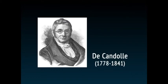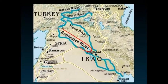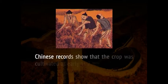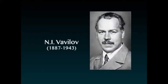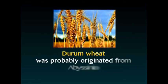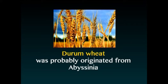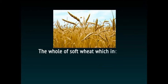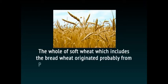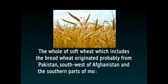Various literatures show that the probable origin of wheat is southwestern Asia. D. Kendal believed that wheat originated from the Euphrates and the Tigris. The crop was believed to be brought to India by the Aryans, and its cultivation dates back to prehistoric times and as early as the Stone Age. Chinese records show the crop was cultivated as early as 2700 BC. N.I. Vavilov's extensive study concluded that Durum wheat probably originated from Abyssinia, whereas bread wheat originated from Pakistan, southwest of Afghanistan, and the southern parts of the mountain Bokhara.